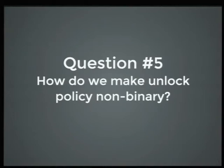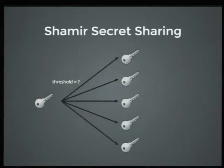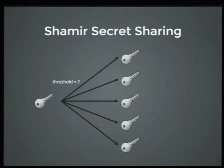How do we make unlock policy non-binary? There's actually a way to do this — a technique called Shamir's secret sharing. Shamir's allows you to take a key and split it up into an arbitrary number of sub-keys. You also define a threshold during this operation. The threshold can be one, in which case if any of these keys is present, we can recalculate the key.